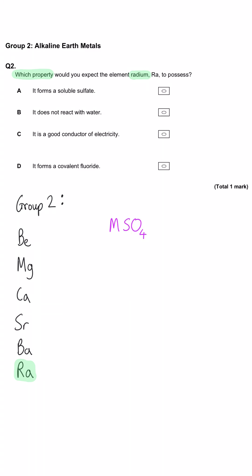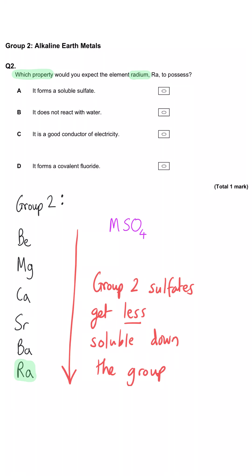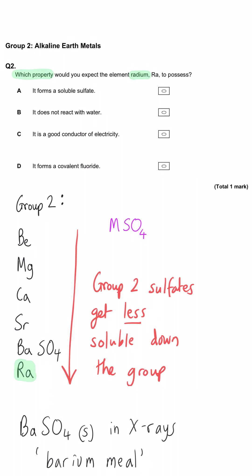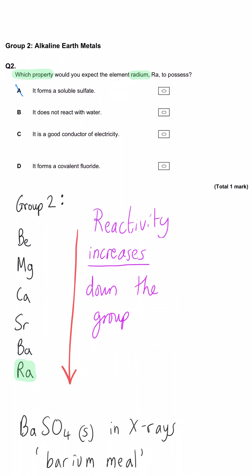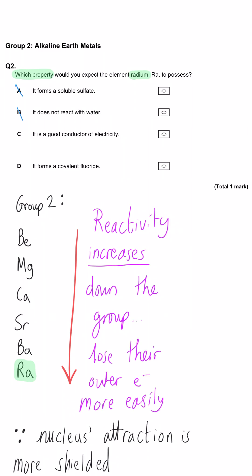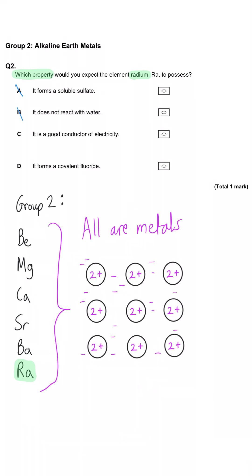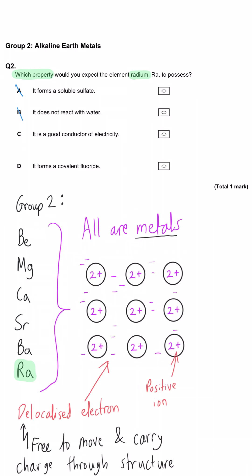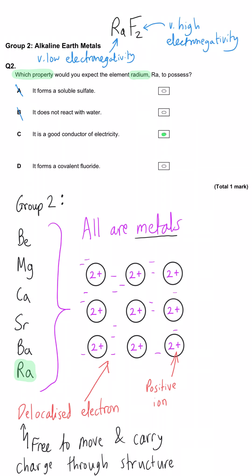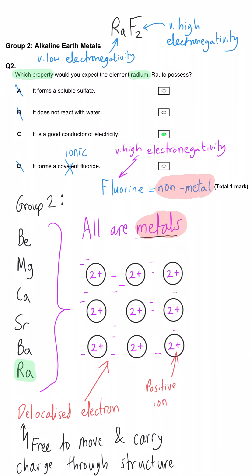You need to know the pattern in solubility down Group 2 — sulphates get less soluble as you go down. Barium sulphate appears in barium meals as that white chalky solid, and radium is below barium, so this won't be true. B, that it does not react with water, is also not true — metals get more reactive going down the group because they lose their outer electrons more easily. C, that it is a good conductor of electricity, is the correct answer because it's a metal. D is wrong — it will not form a covalent fluoride; it has very low electronegativity and will definitely be ionic.